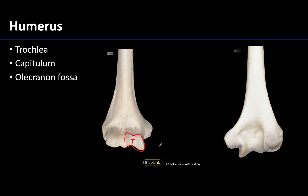The trochlea is pretty distinguishable from the more bulbous capitulum, which is just lateral to it. If still confused, look to see which structure is next to the more distinct projection just superior to it — this is the medial epicondyle. We'll talk more about that as an attachment site for forearm muscles, but the articular surface closest to the medial epicondyle will be the trochlea.